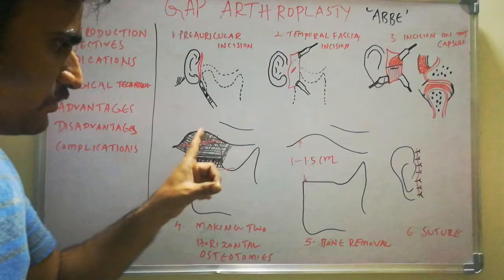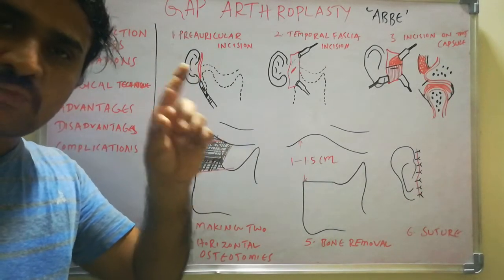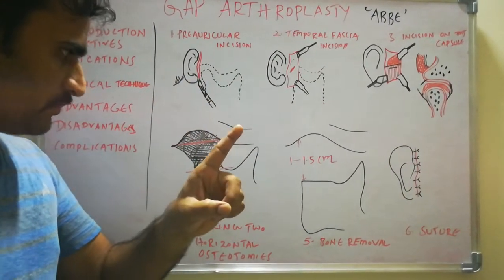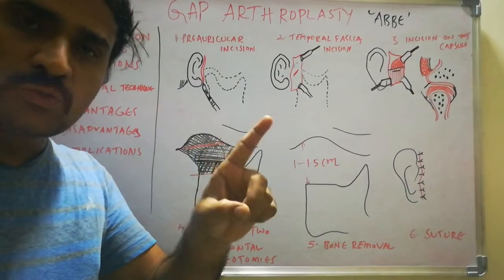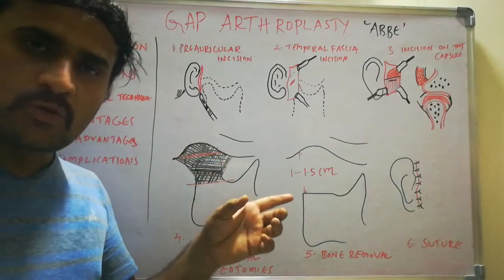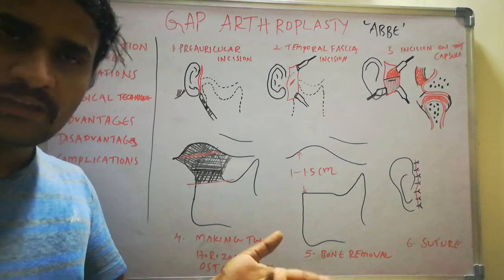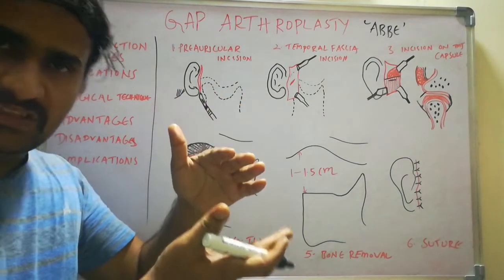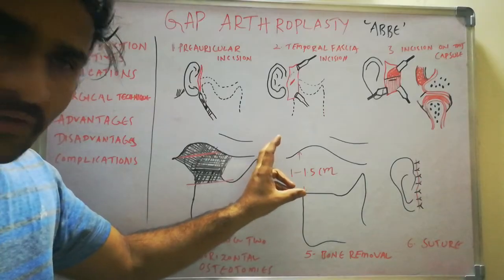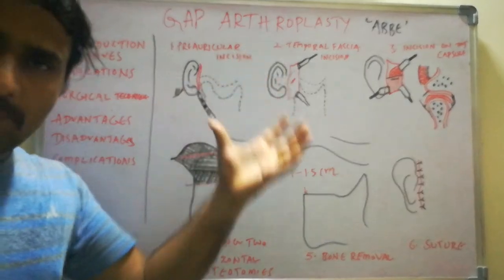Coming to the complications, the main complication during the superior horizontal osteotomy is perforation into the middle cranial fossa. Other complications include anterior open bite after the procedure and decreased ramus vertical length due to the amount of bone removed.